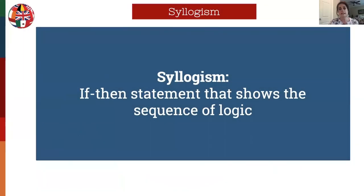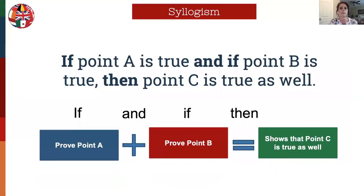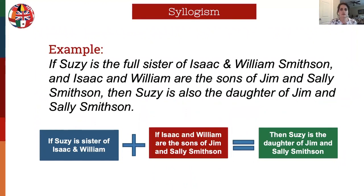The next technique is called a syllogism. Basically a syllogism is an if-then statement that shows the sequence of logic, and it helps the reader follow the logic better if you use the terminology of 'if' and 'then.' Visually: if point A is true and if point B is true, then point C is true as well. In the example: if Susie is the full sister of Isaac and William Smithson, and Isaac and William are the sons of Jim and Sally Smithson, then Susie is also the daughter of Jim and Sally Smithson.